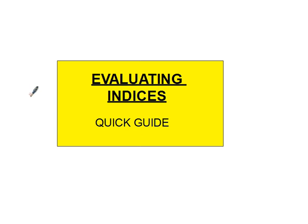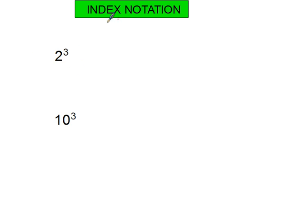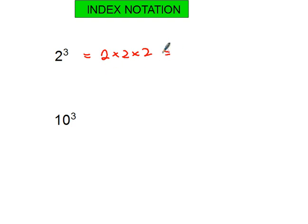Welcome to this video about evaluating indices. First we need to understand index notation. If you're asked to write 2³ in another way, you might write it as 2 times 2 times 2 — the power tells you how many times you write the number. If asked to evaluate it, you work out the calculation: 2 times 2 is 4, times 2 is 8.